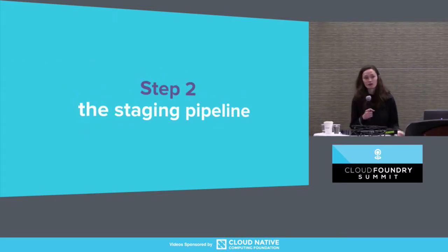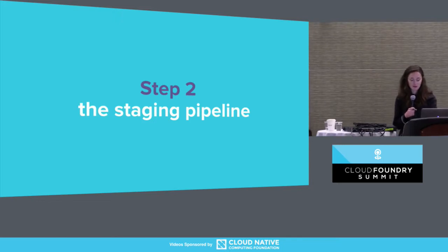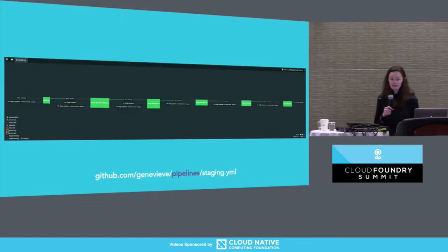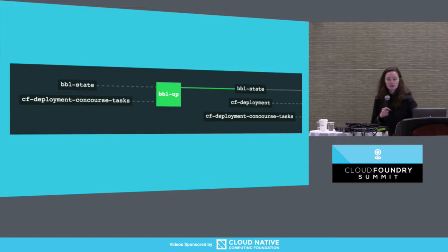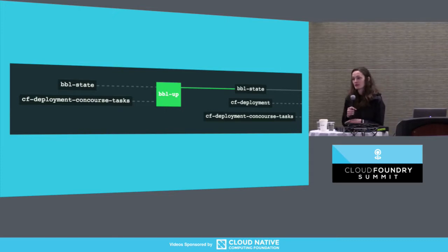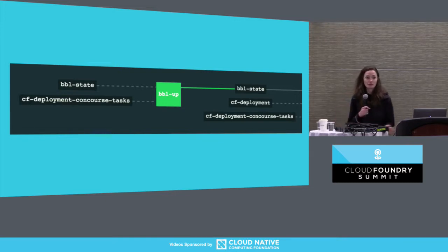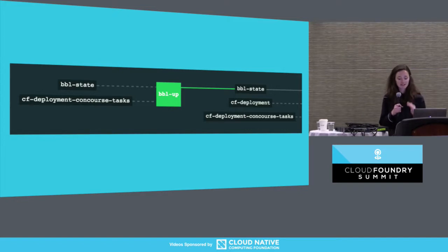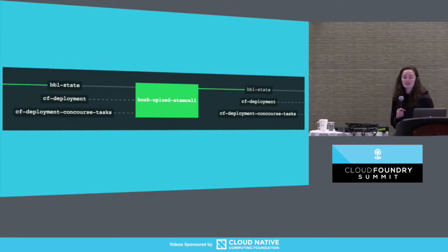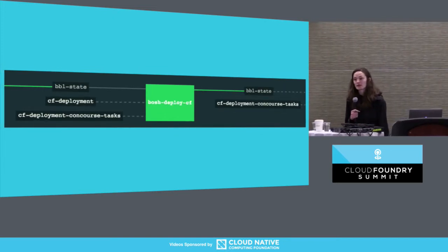Let's go through the first pipeline — we'll call this one the staging pipeline — and add it to our Concourse deployment. It's using CF Deployment Concourse tasks, so we'll go through each of the jobs. In the first step, we're going to `bbl up` a BOSH director. The output of this step is a BBL state directory, which you'll want to store in a secure location like an S3 bucket or a private Git repo. All the files in this directory were used to create your BBL environment and will help you do updates and talk to that director. The next job is to upload the stemcell to the BOSH director, and then you run CF Deployment against that BOSH director.